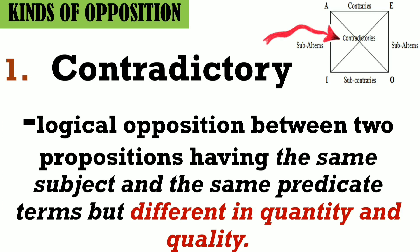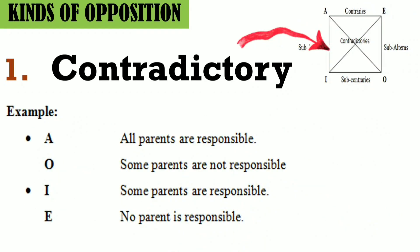Same with E and I: E is negative and I is affirmative; I is particular and E is universal — so they differ in both quantity and quality. Example: A — 'All parents are responsible.' According to O — 'Some parents are not responsible.' Note 'some' and 'not' — the difference in quantity and quality.